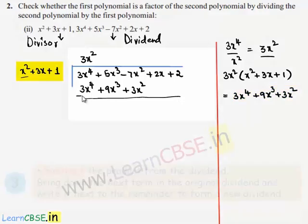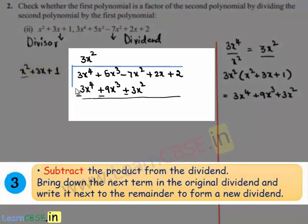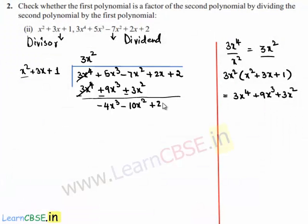On subtracting, 3x⁴ and minus 3x⁴ cancel. 5x³ minus 9x³ is minus 4x³, and minus 7x² minus 3x² is minus 10x². This brings down 2x plus 2. Now the new dividend is minus 4x³ minus 10x² plus 2x plus 2.